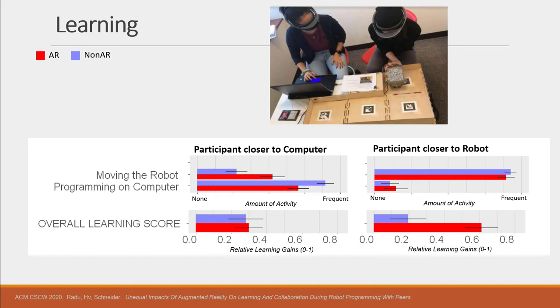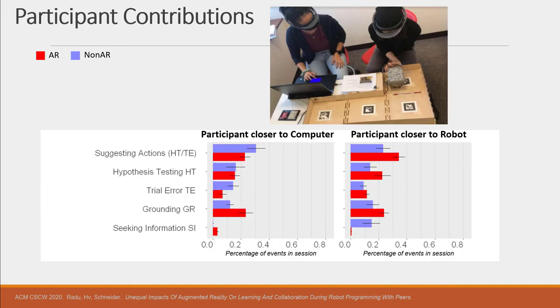To understand this more we analyzed each person's speech contributions to the collaborative process. We find that both the right and left participants increased their grounding contributions when they had augmented reality.